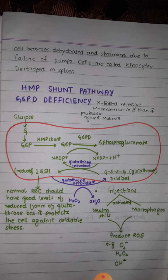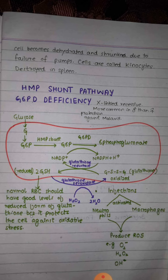This NADPH and H positive react further inside our red blood cells. Red blood cells contain glutathione in its oxidized form. This oxidized glutathione reacts with NADPH plus H positive, accepting hydrogen atoms via the enzyme glutathione reductase, and is converted into reduced glutathione. Normal red blood cells should maintain good levels of reduced glutathione because it protects the cell against oxidative stress.